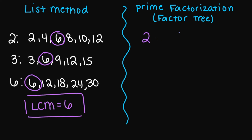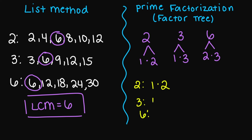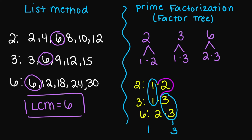If you did the factor tree: two factors into one times two, three into one times three, and six into two times three. So two is one times two, three is one times three, and six is two times three. I have a match for the twos — I write that one time. I also have a match for the ones — write that one time. And I have a match for the threes. So one times two is two, and two times three is six. So your final answer is six.